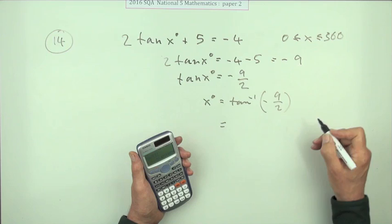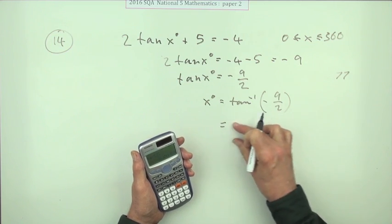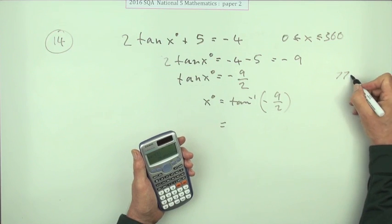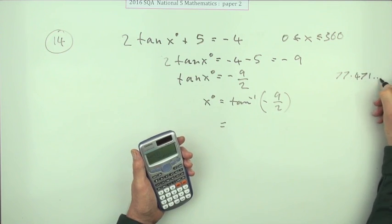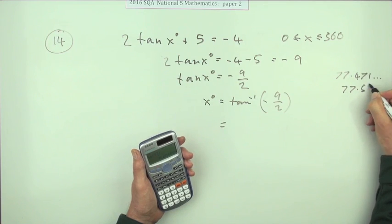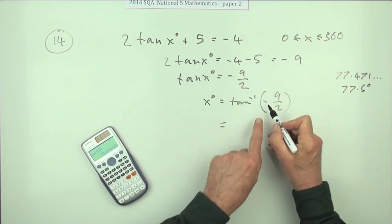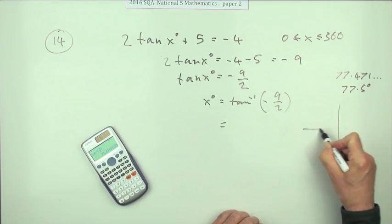That gives you 77.471 and so on, so I'm just going to call that 77.5 degrees. Then use the negative part to put it where it's meant to go.